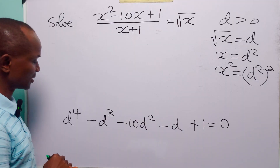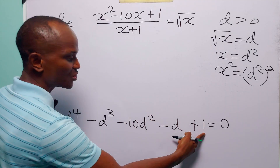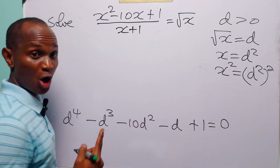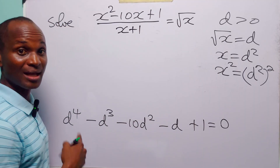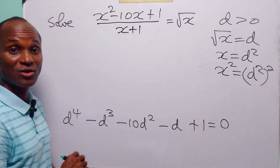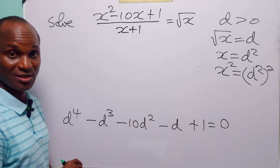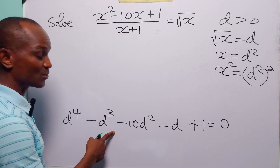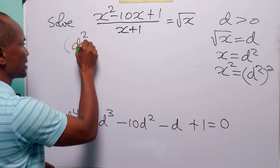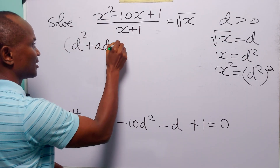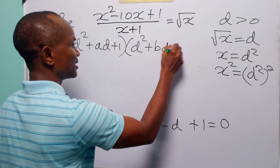Now, when you look at this quartic equation arranged in descending powers of d, you will notice that the coefficients of the outermost terms are the same: 1 and 1. Also, the coefficients of the next inner terms are the same: minus 1 and minus 1. And then the middle term has the coefficient minus 10. So this quartic equation is symmetrical. There is a very easy way to factor such quartic equations. Let us assume that this quartic equation has two quadratic factors, and let the quadratic factors be d squared plus ad plus 1 and d squared plus bd plus 1.